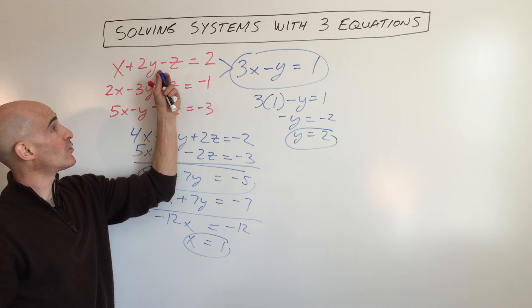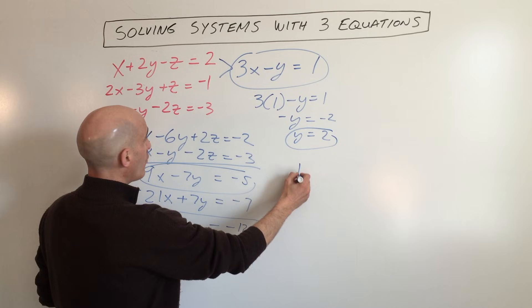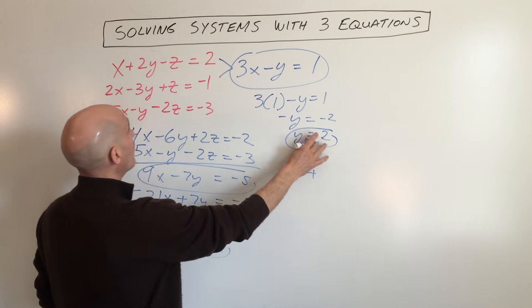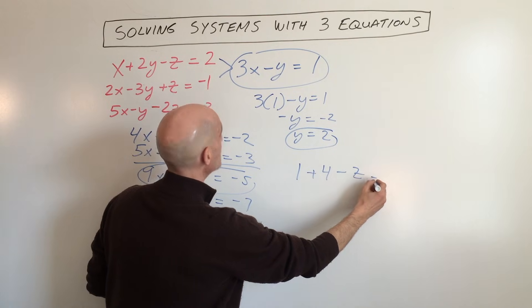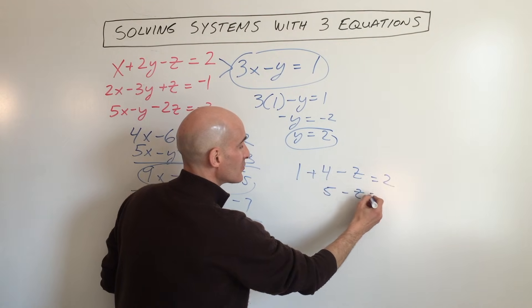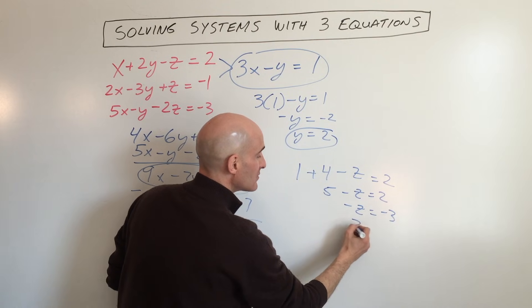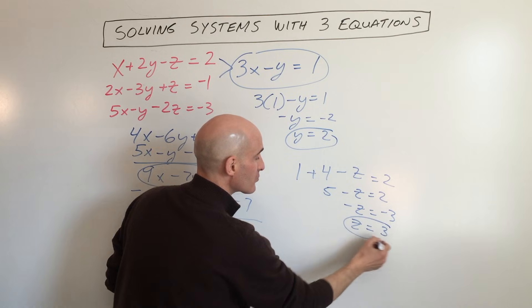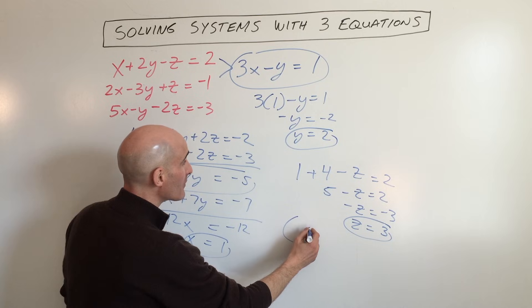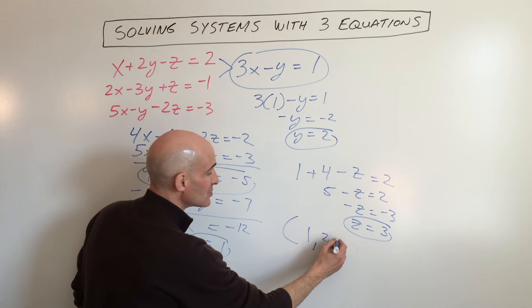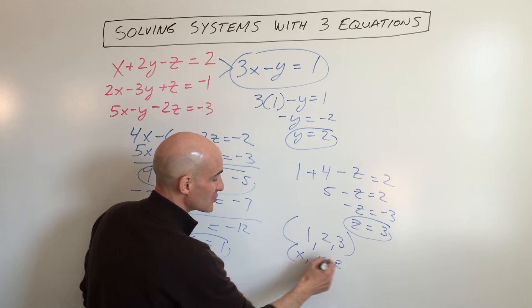So now we know what x and y are. Let's go ahead and put it back into one of the original equations to solve for z. We'll do the top one: 1 plus 2 times 2 is 4, minus z equals 2. That's 5 minus z equals 2. Subtract 5, that equals negative 3. Divide by negative 1: z equals 3. So now we have x equals 1, y equals 2, z equals 3, and we write this as an ordered triple (1, 2, 3) in alphabetical order.